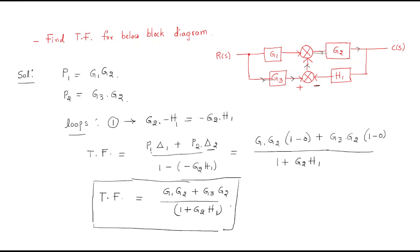We will discuss more problems, and then you will understand very easily. When gain values increase, finding the transfer function becomes very difficult, which is why we use Mason's gain formula. I think all of you understood this session. Thank you.